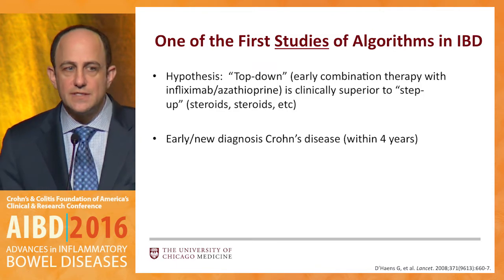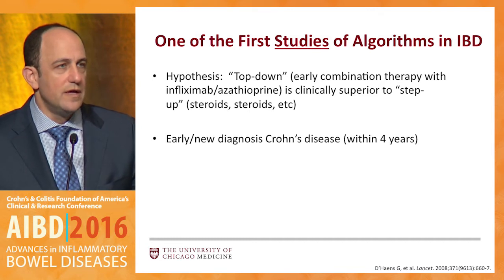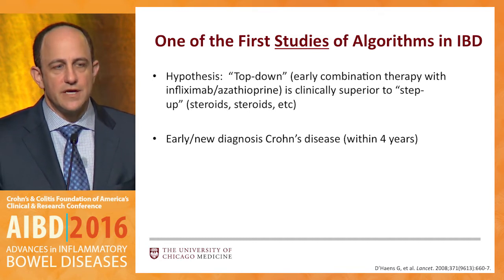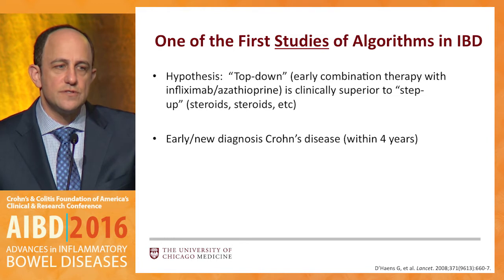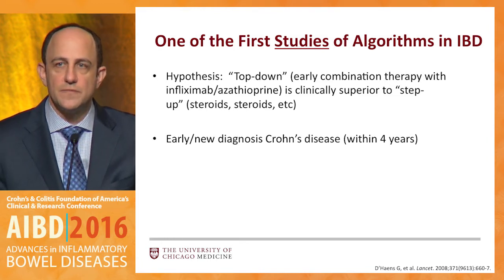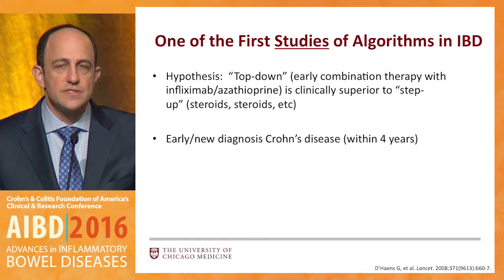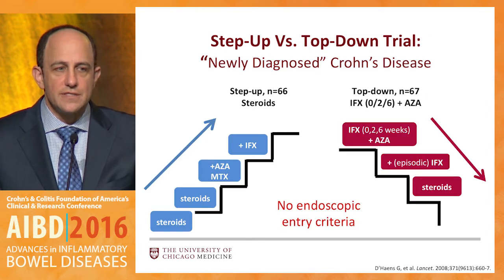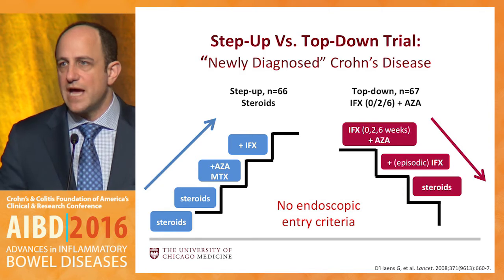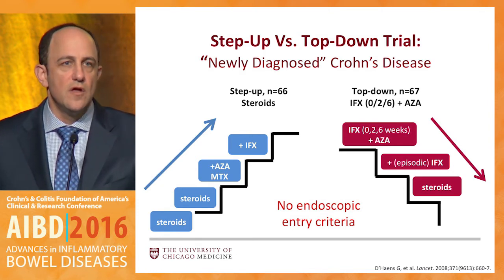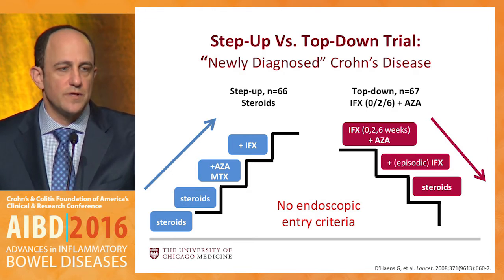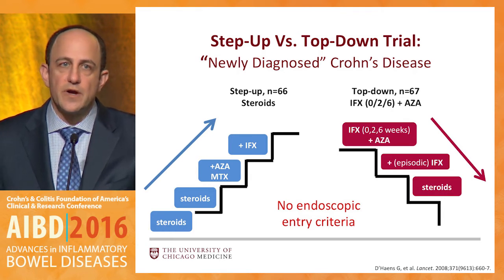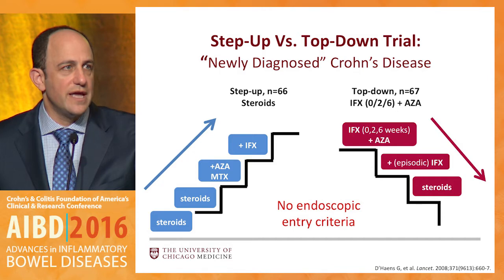One of the first studies of algorithms in IBD is the study many in the room will remember as the Step Up Top Down Study. It was a study of early combination therapy with infliximab loading and azathioprine maintenance, compared to step-up, which was steroids working all the way up to infliximab after it was needed. This was designed for early or new diagnosis of Crohn's within four years. The study design had a hypothesis that top-down or early combination therapy would have a better clinical outcome than the step-up strategy. It was based predominantly on the old-fashioned CDAI without any endoscopic entry criteria.